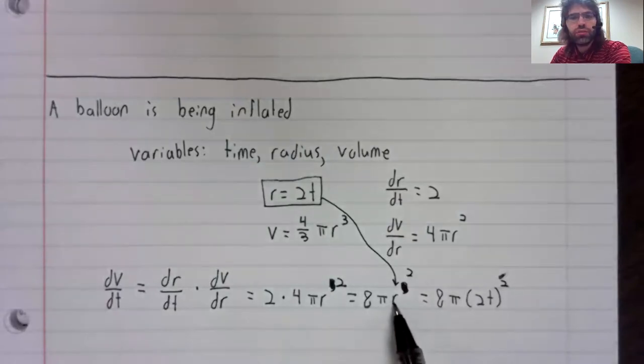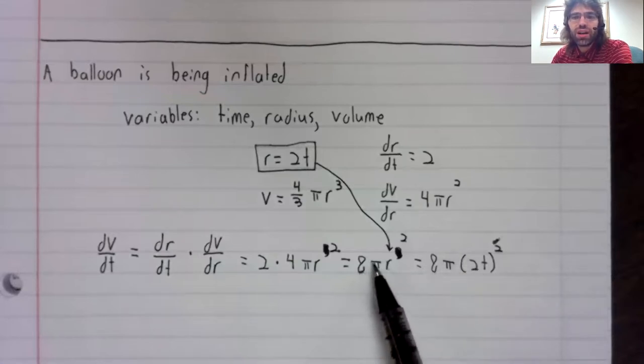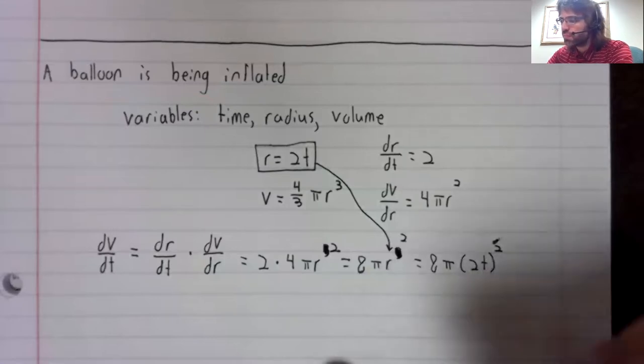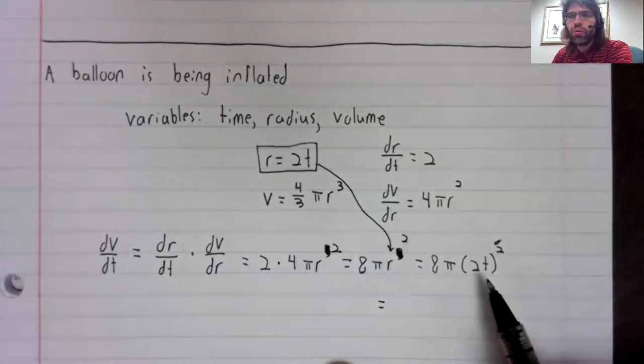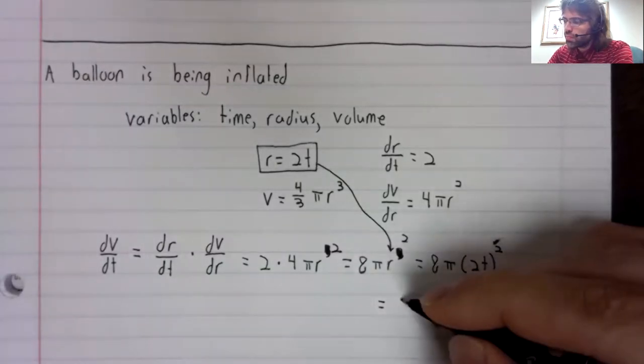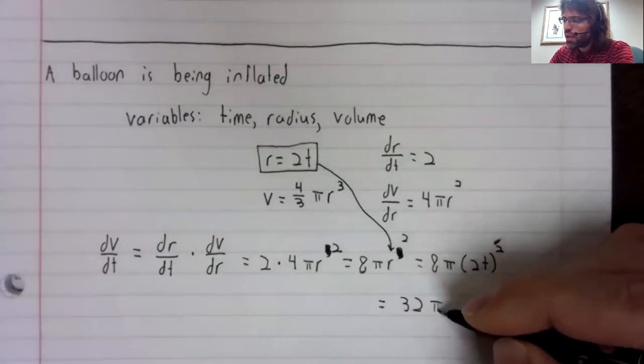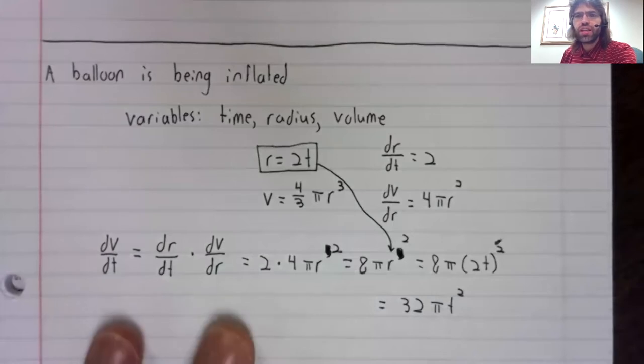R is 2t, so if we want our variable to be t, we just replace r with 2t. We just replace r with 2t. 8π times (2t)² equals 32πt². And that is version one of the chain rule.